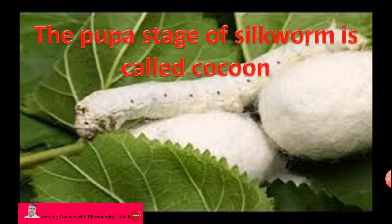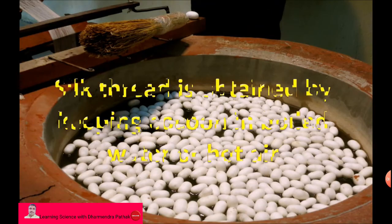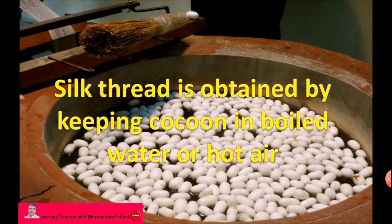The larva then changes into a pupa. The pupa stage of silkworm is called a cocoon. In this stage, the silkworm remains inactive and grows inside the puparium — this is called histogenesis. Silk thread is obtained by keeping the cocoon in boiled or hot water. The early stage cocoon is used for this purpose, because in the late stage the silk thread gets damaged by the silk moth present inside.